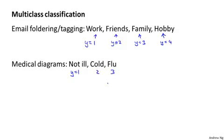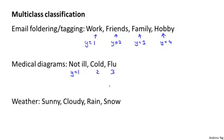or they have a flu. And third and final example, if you are using machine learning to classify the weather, maybe you want to decide that the weather is sunny, cloudy, rainy, or snow. And so in all of these examples, y can take on a small number of discrete values, maybe 1 to 3, 1 to 4, and so on. And these are multi-class classification problems.